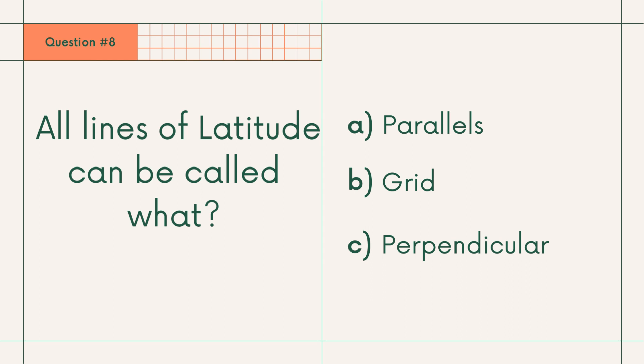Question number 8: All lines of latitude can be called what? A. Parallel, B. Grip, or C. Perpendicular. Answer: A. Parallel.